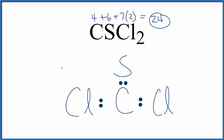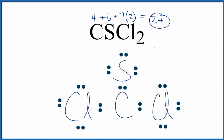Then we'll complete the octets on the other atoms until we run out of valence electrons. We've now used all 24 valence electrons, and all of the atoms except carbon have an octet. Carbon only has 6 valence electrons here, so we're going to have to share valence electrons in order to complete the octet on the carbon.